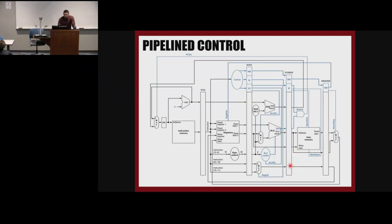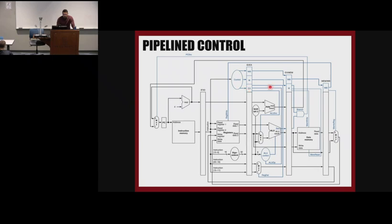Would it be wrong to have the multiplexer at an earlier stage? No. Is it efficient? No. The best place for the multiplexer to choose the destination register is the execution stage. I'm emphasizing this because I want you to understand how the pipeline works and what the trade-offs are. This is how a control unit works — we put the control unit in the decoding stage because we do decoding at that stage, and all control signals are defined based on the opcode.